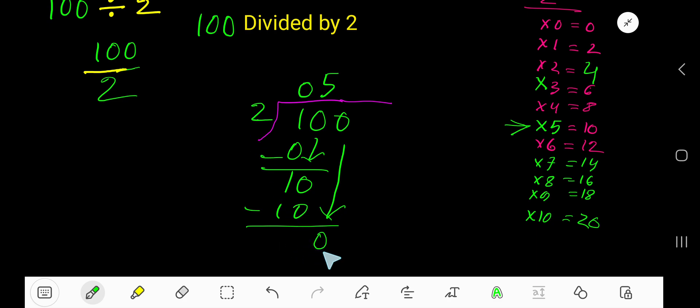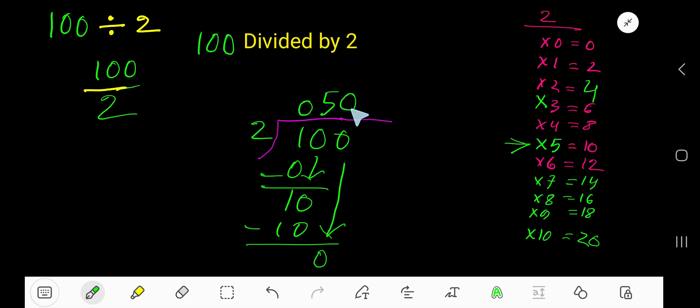2 goes into 0 how many times? 2 goes into 0, 0 times, right? 0 times 2 is 0.